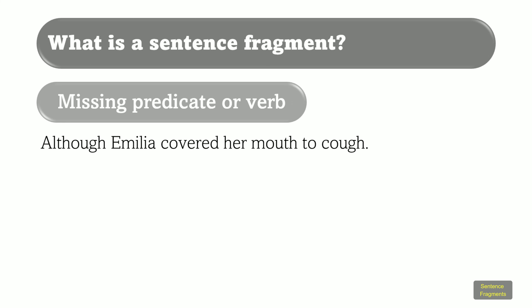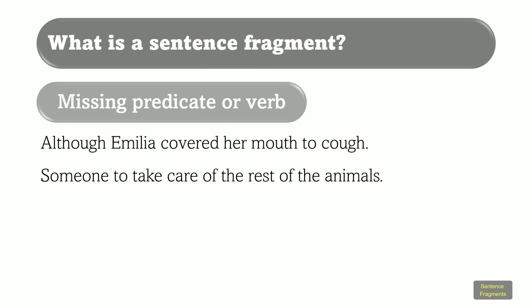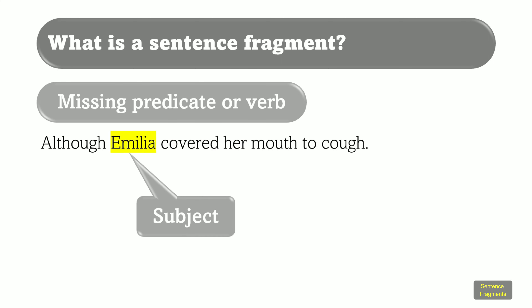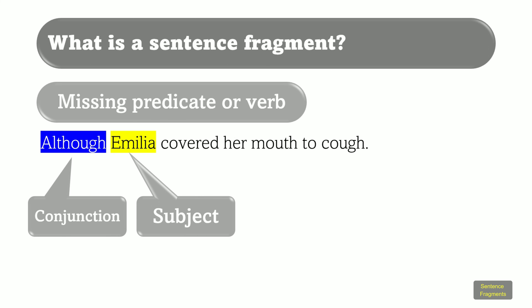Although Emilia covered her mouth to cough. Someone to take care of the rest of the animals. In the first sentence, Emilia is the subject — she did the right thing, she covered her mouth to cough. However, the conjunction 'although' tells us that something else happened despite the fact that Emilia covered her mouth, but we do not know what that is. And that's the reason why this is a sentence fragment.